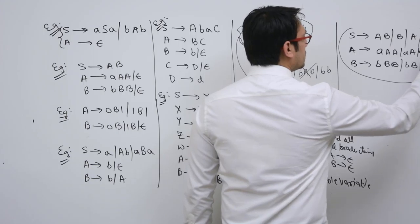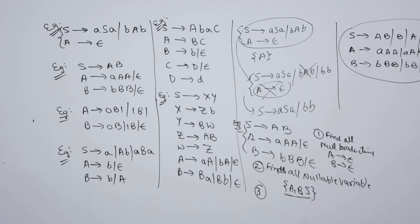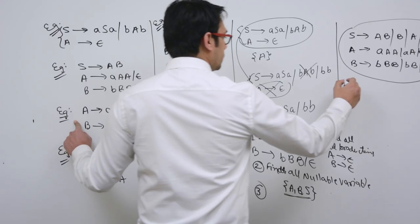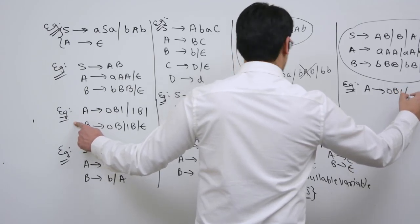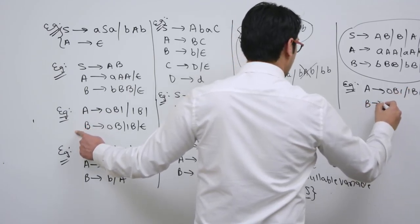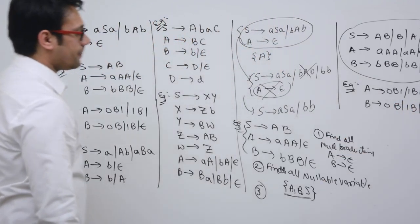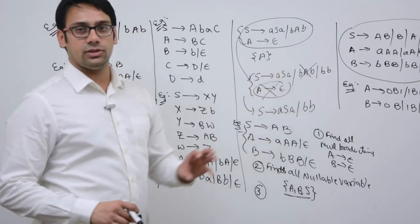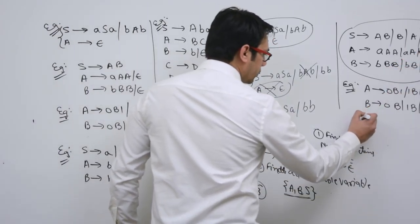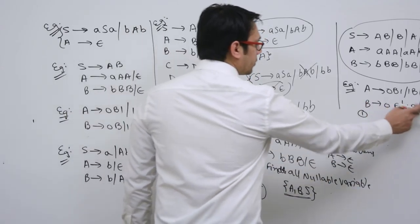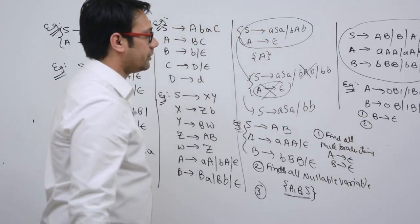Therefore, this grammar is not having any epsilon production. Now take the next example: A derives 0 B 1 | 1 B 1, B derives 0 B | 1 B | epsilon. Step 1: find all null productions — the only one is B derives epsilon. Step 2: find all nullable variables — B is the only nullable variable.